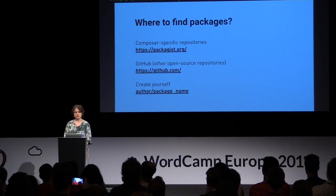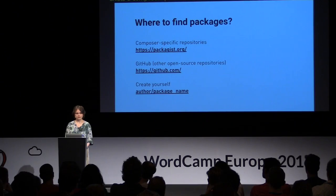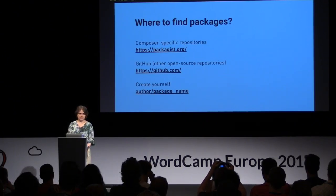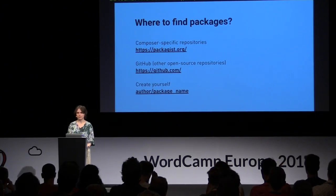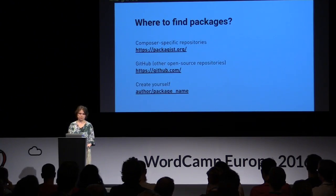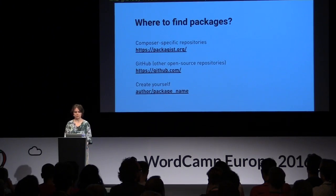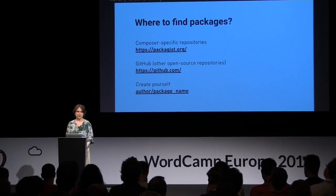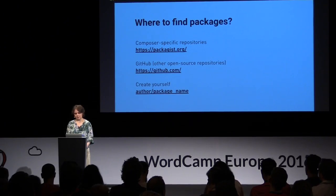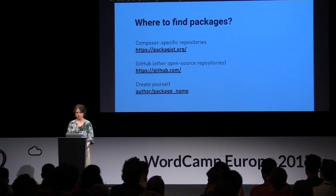When you have a properly formatted composer.json for your project, it can also be considered a package. You can release it publicly if you want, or use it internally inside your team. Where can you find Composer-compatible packages? First, there are Composer-specific repositories and registries. But any other sources for open-source code — like GitHub, Bitbucket, and similar platforms — will also work, because libraries there can also be compatible with Composer. And finally, you can create packages yourself and store them in your own repositories on GitHub or release them to a public registry.